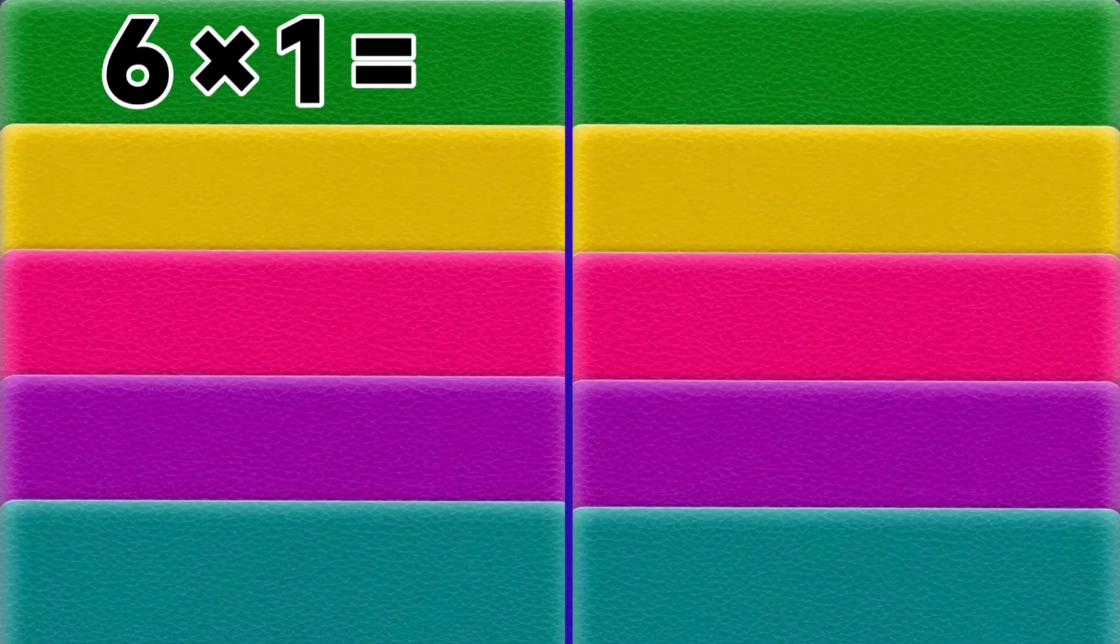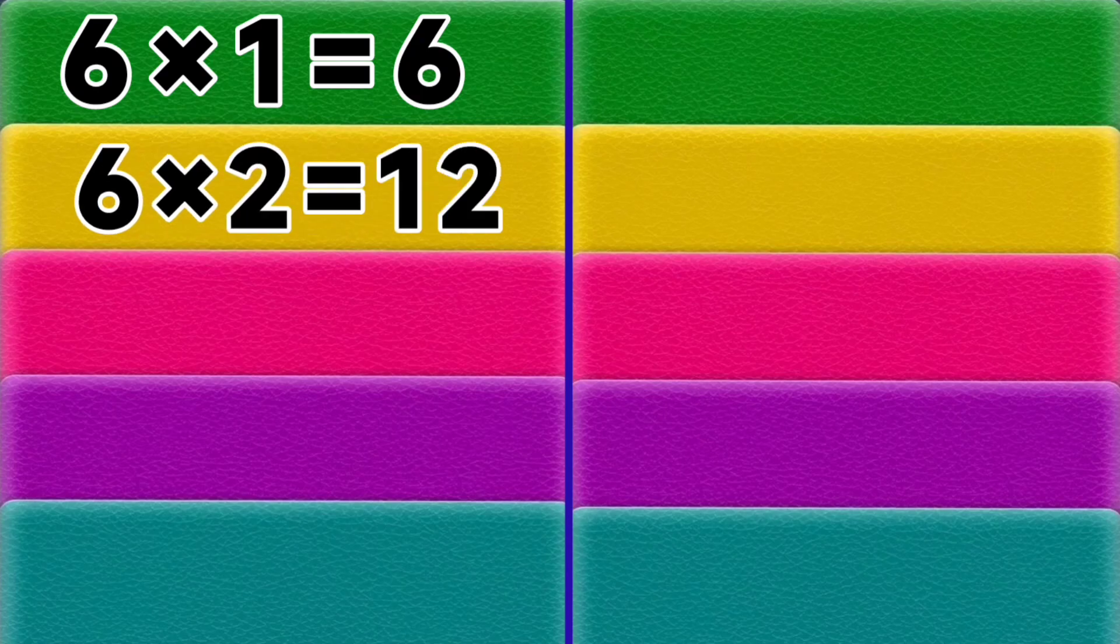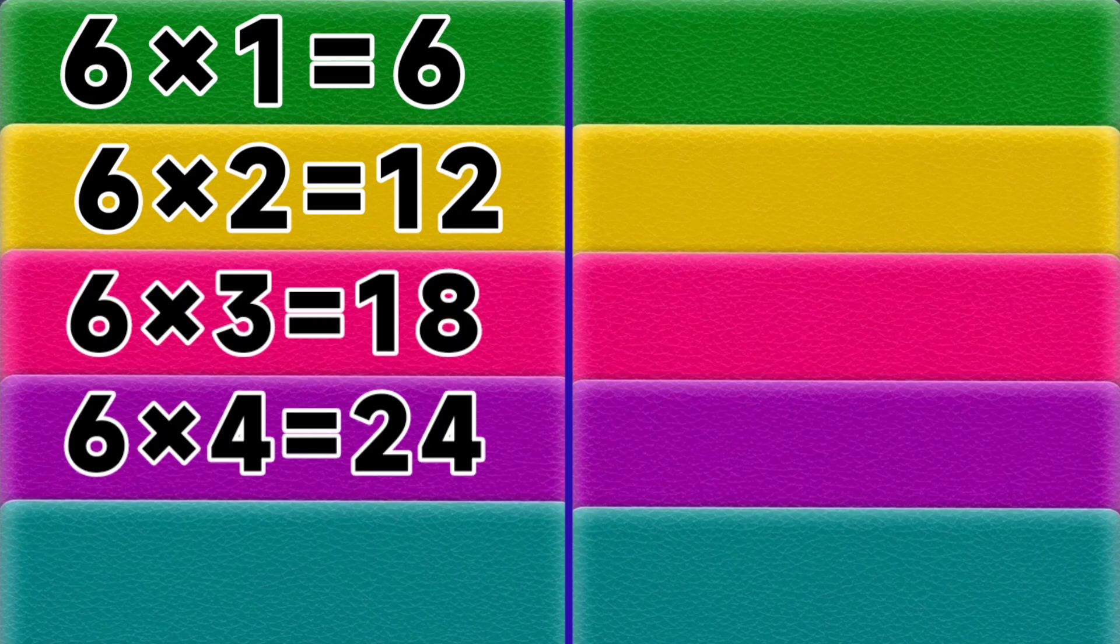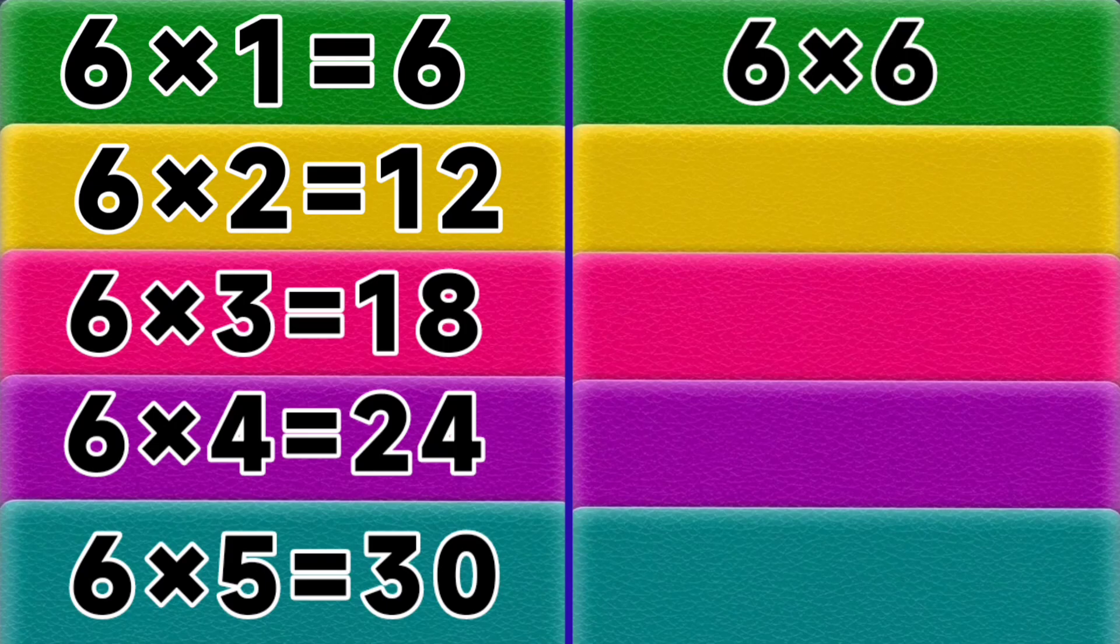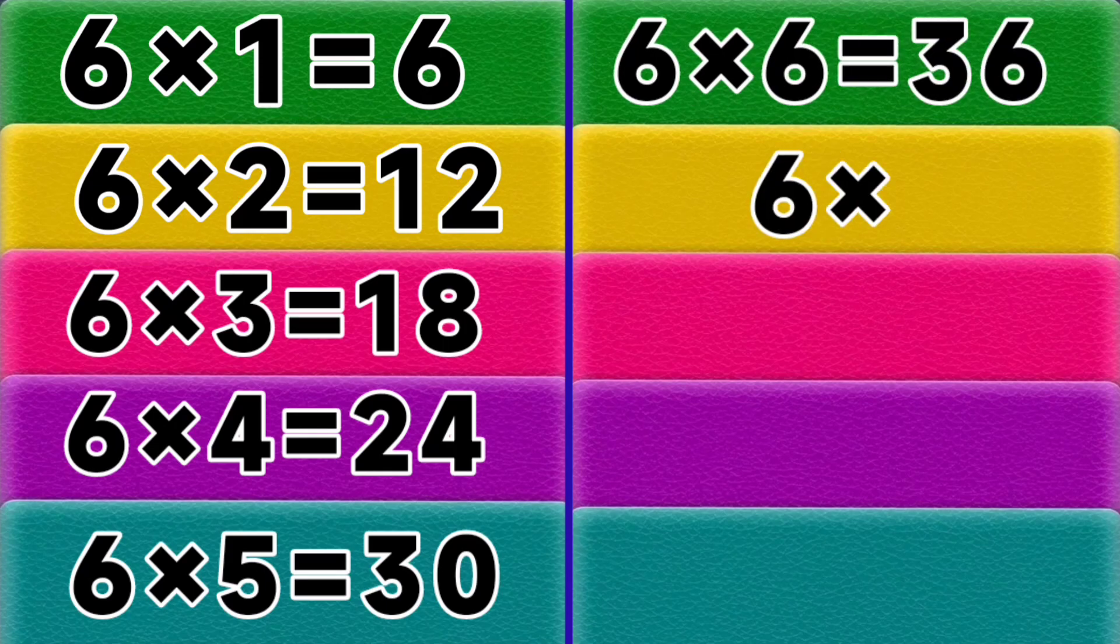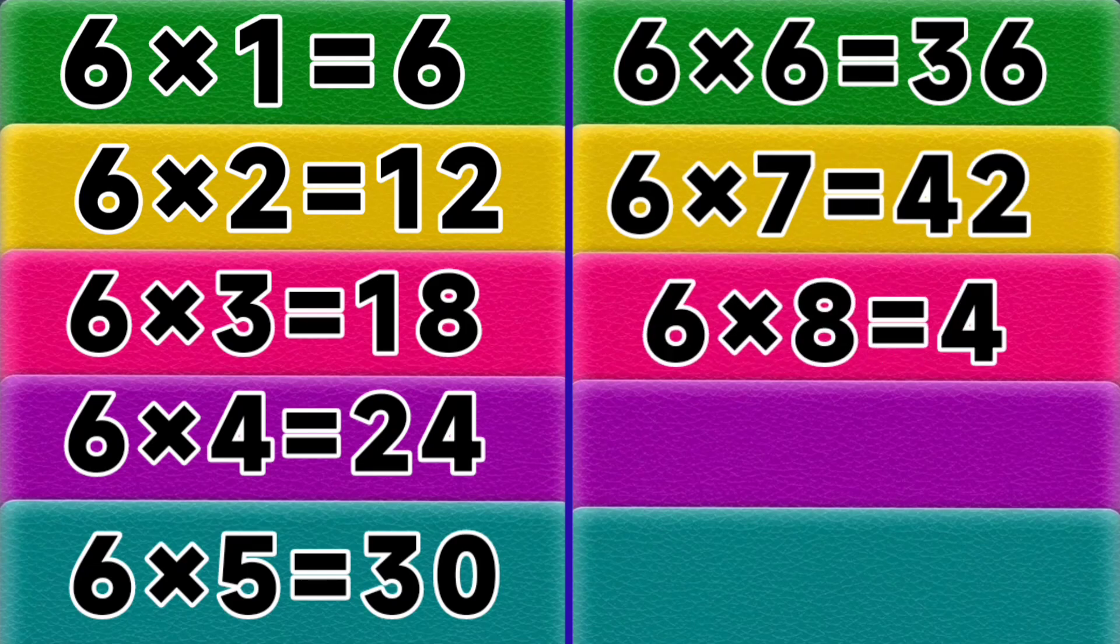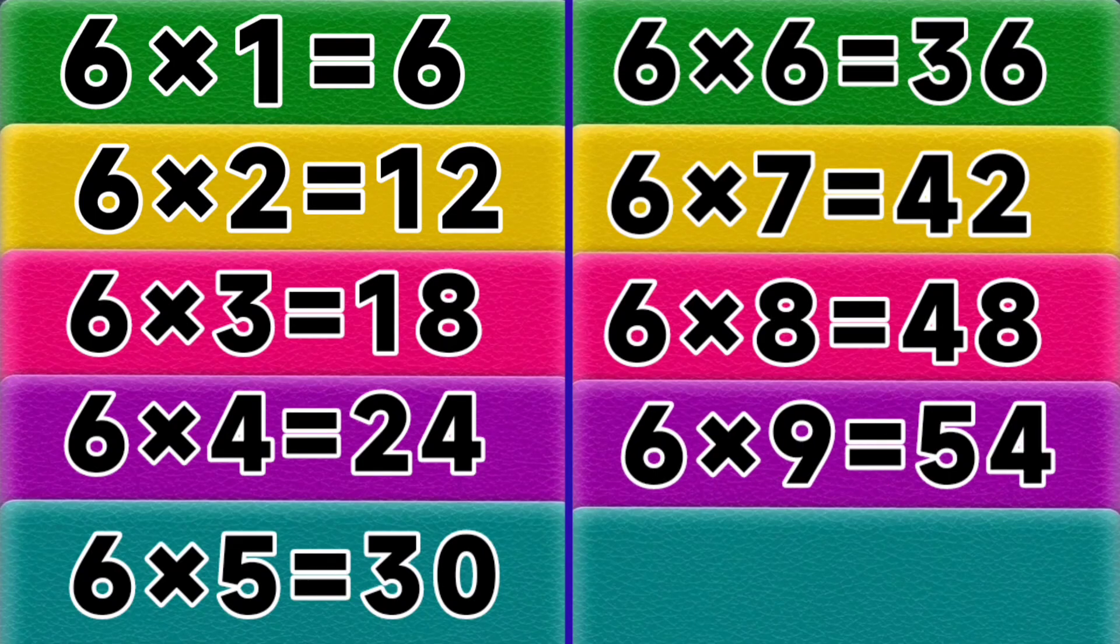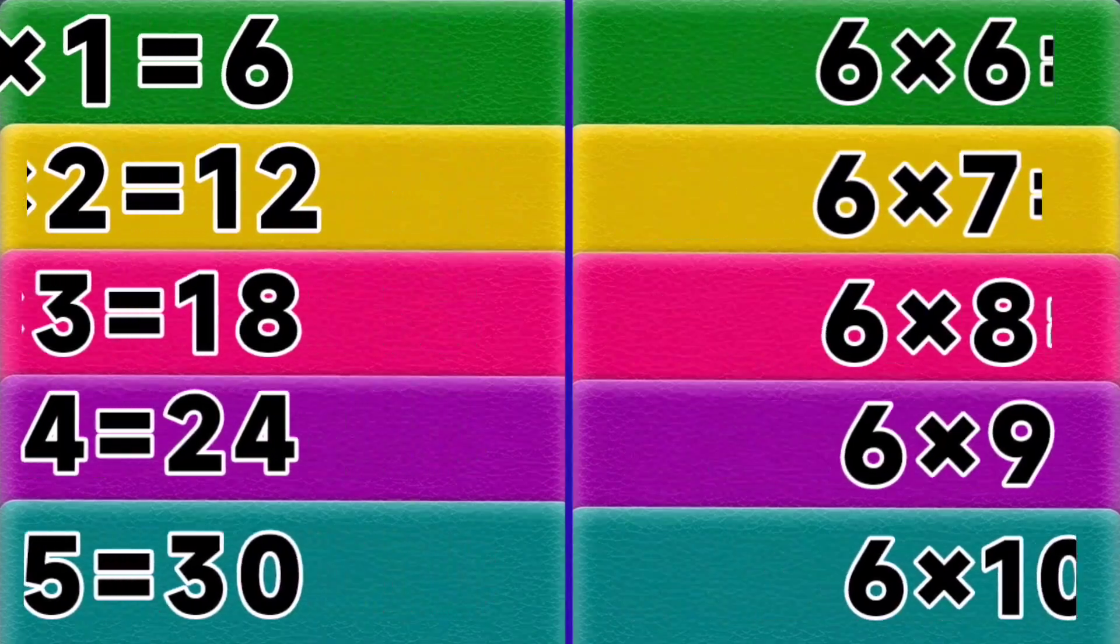6 ones are 6, 6 twos are 12, 6 threes are 18, 6 fours are 24, 6 fives are 30, 6 sixes are 36, 6 sevens are 42, 6 eights are 48, 6 nines are 54, 6 tens are 60. Table of 7.